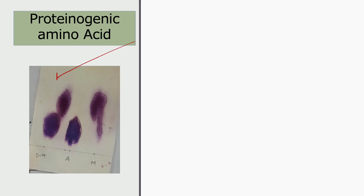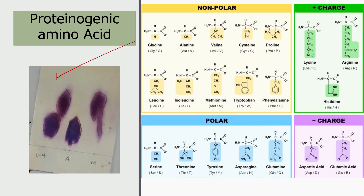On a chromatographic plate, arginine and methionine behave differently. Methionine moves faster than arginine because arginine is positively charged and reacts with the stationary phase, slowing it down. Methionine, being non-polar, moves faster. This can be demonstrated on a TLC plate or paper chromatography.